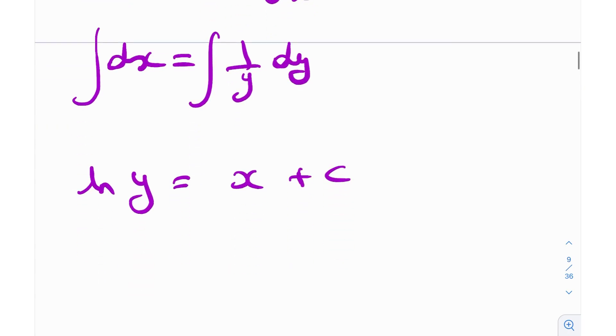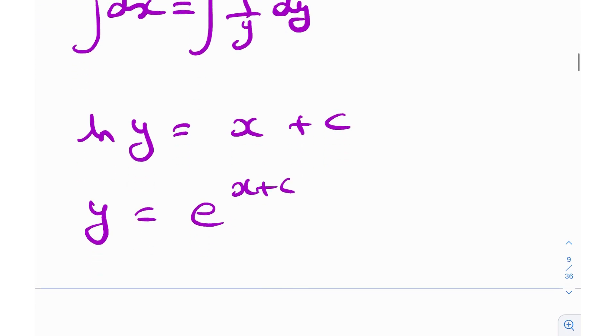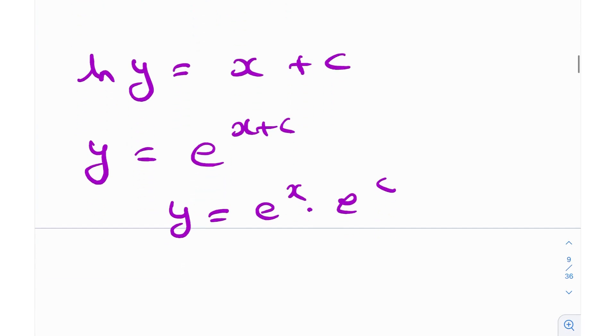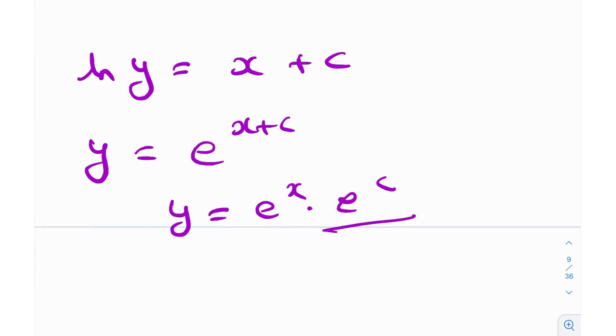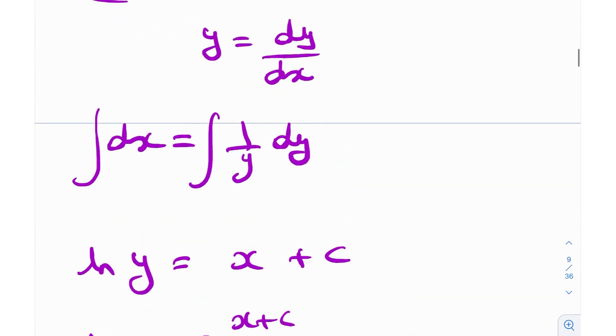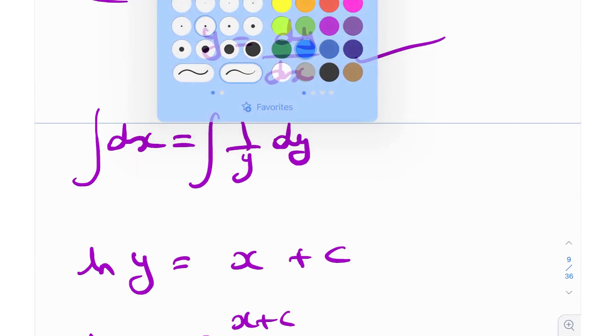So y is nothing but e^(x+C), or I can write y = e^x · e^C. And e^C is obviously a constant because C is a constant and e is Euler's number. So I can write y = A·e^x, which is a valid solution to this differential equation.